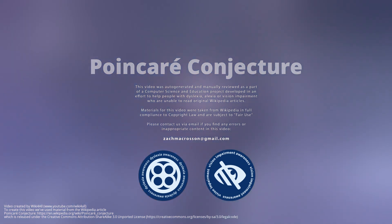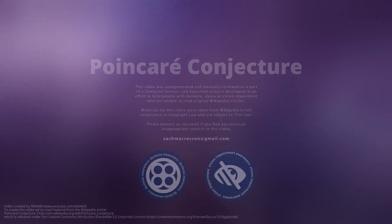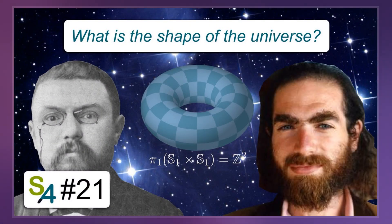In mathematics, the Poincare conjecture is a theorem about the characterization of the three-sphere, which is the hypersphere that bounds the unit ball in four-dimensional space.